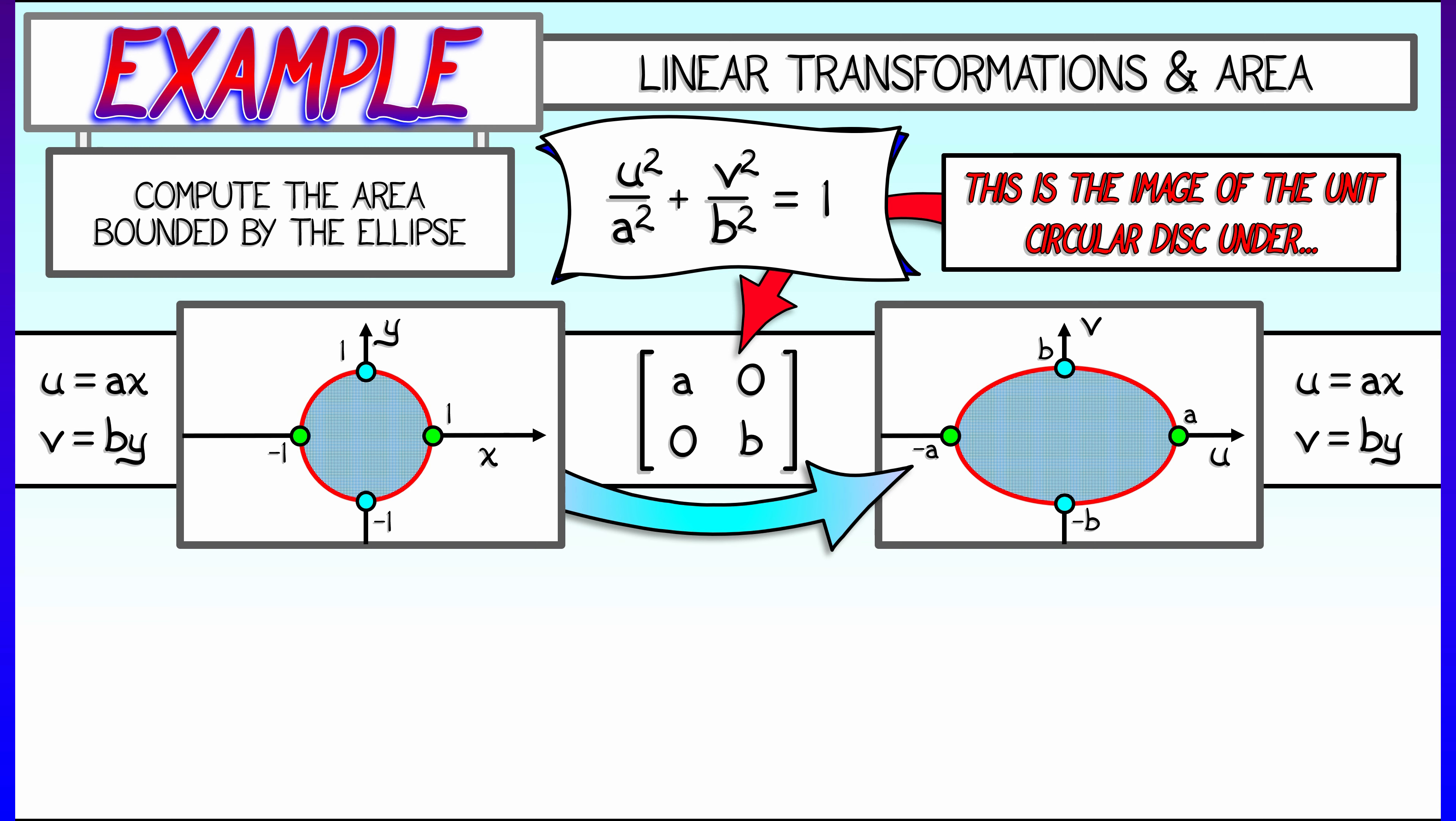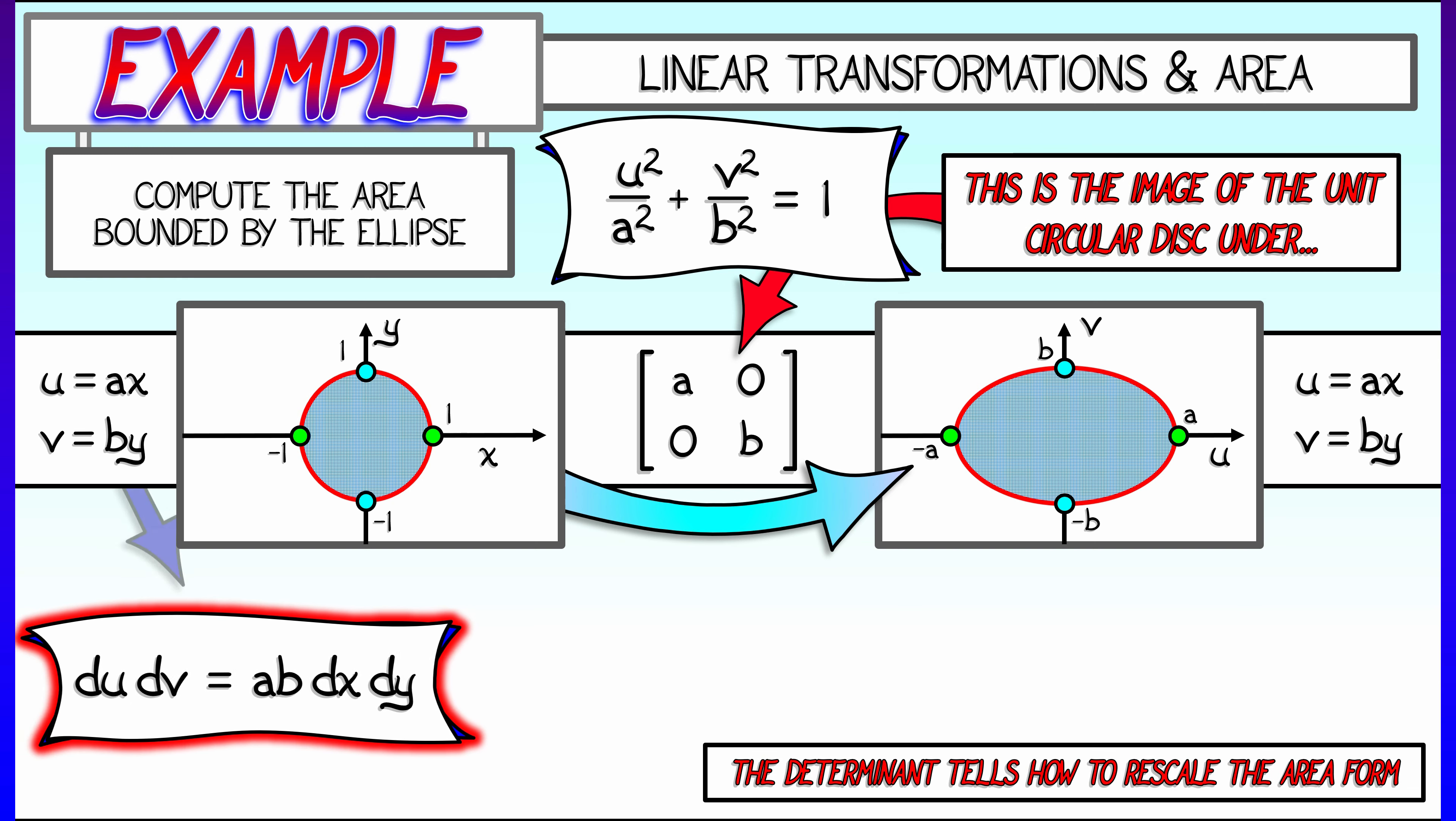This linear transformation is represented by the matrix a, 0, 0, b. This stretches or compresses along the horizontal and vertical axes. And the determinant tells you how to rescale the area form.